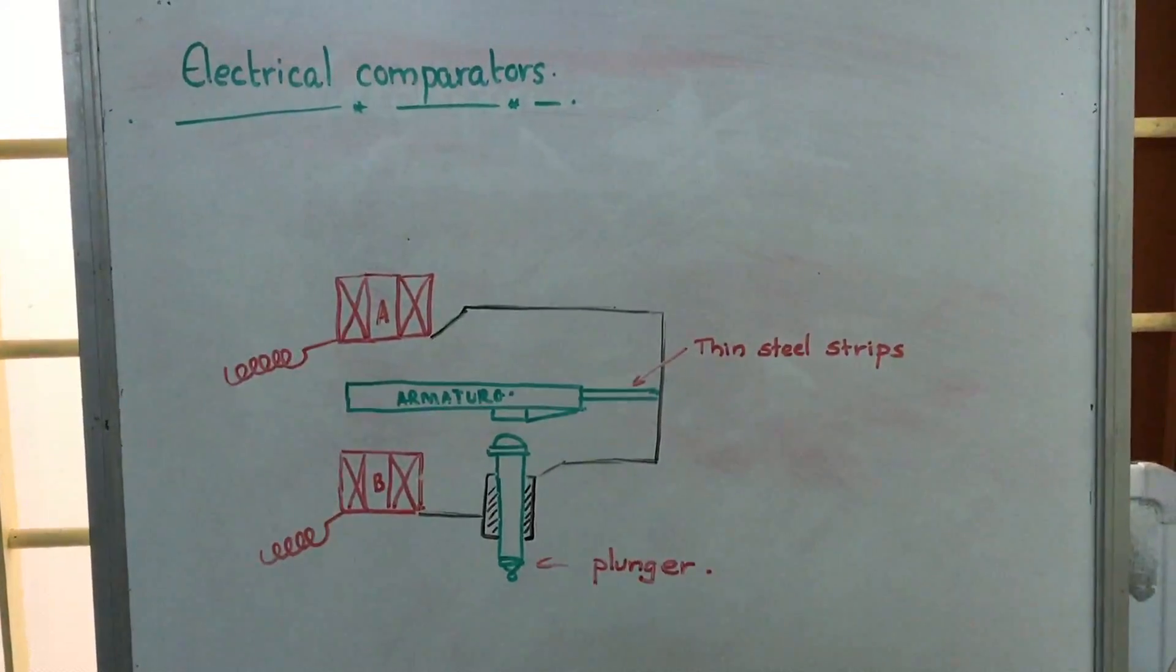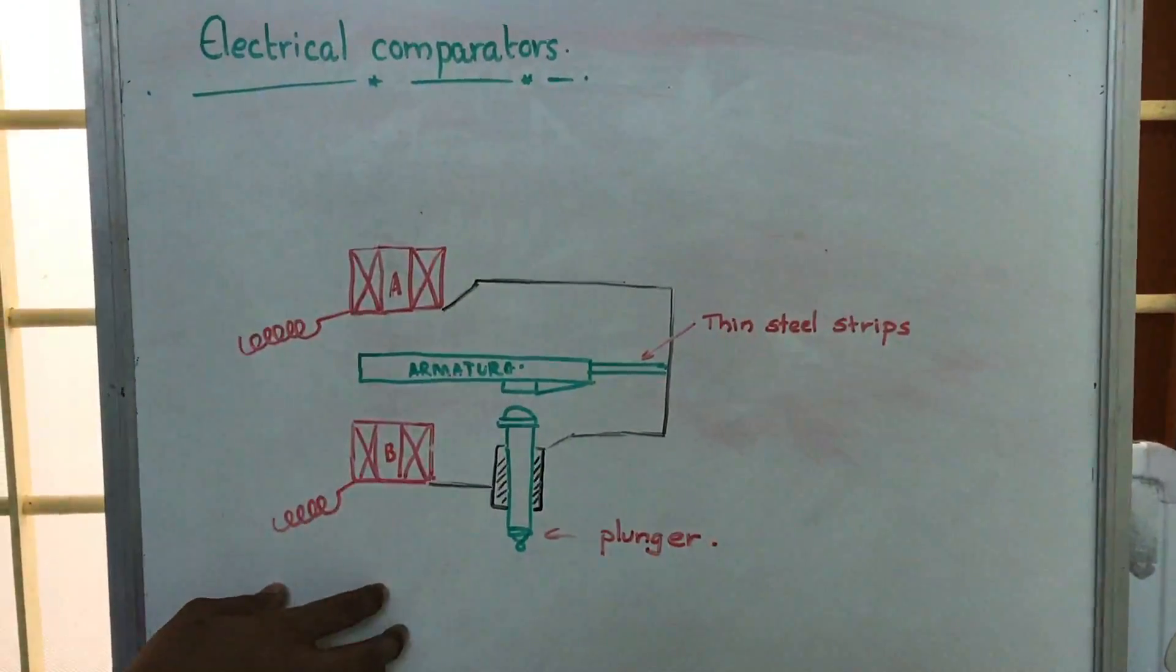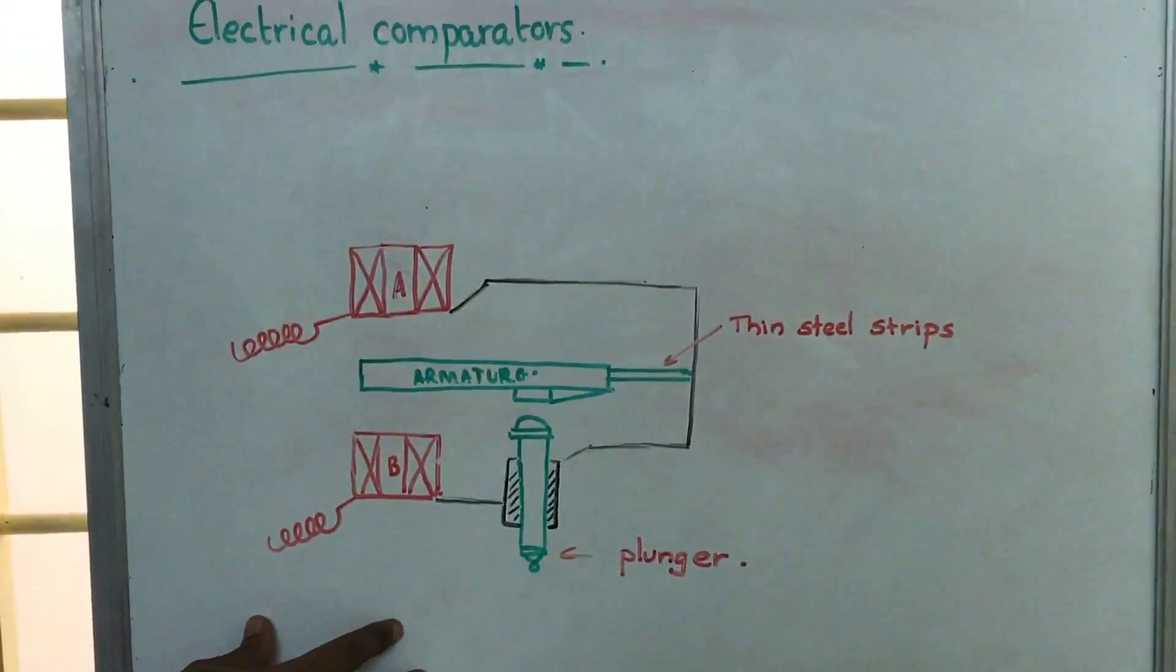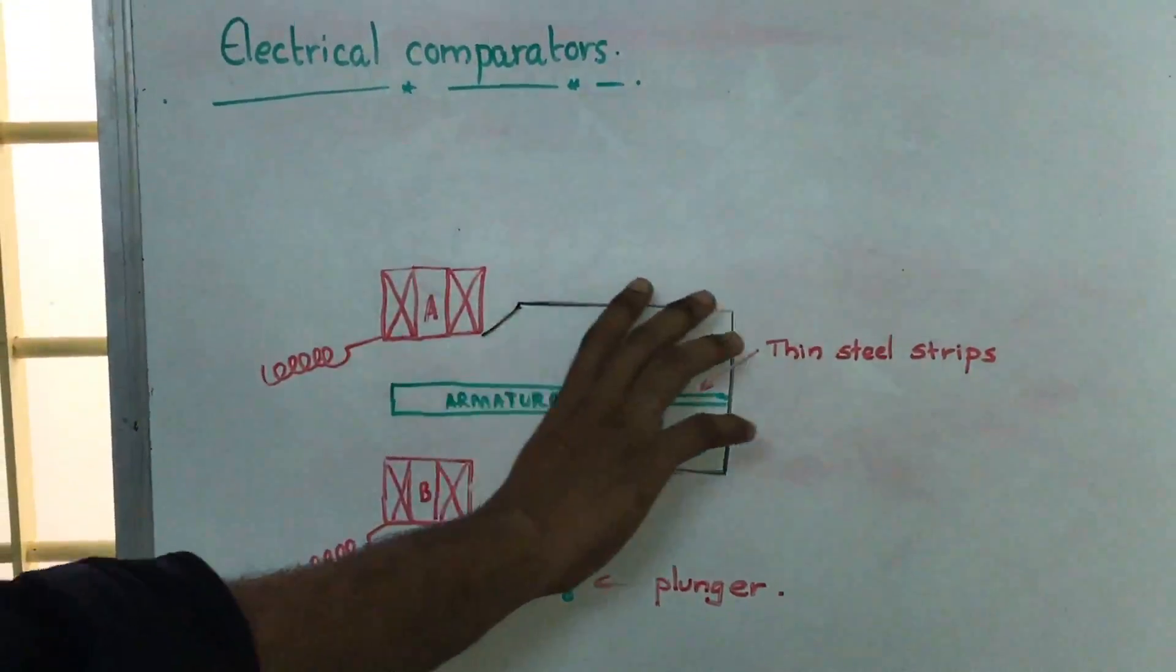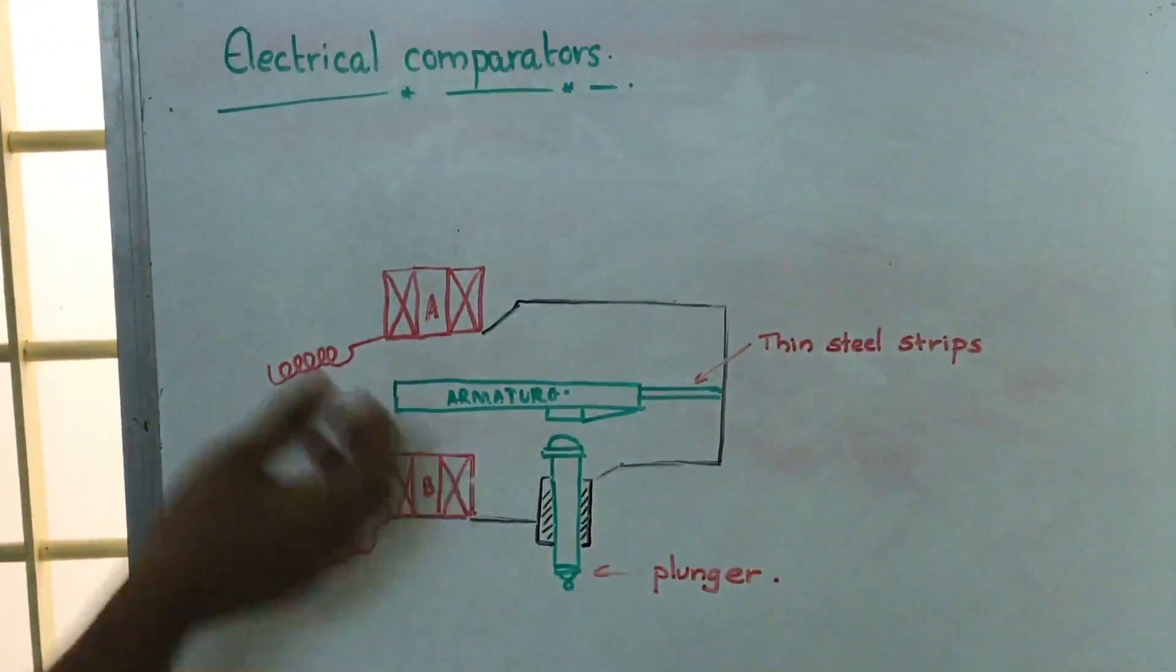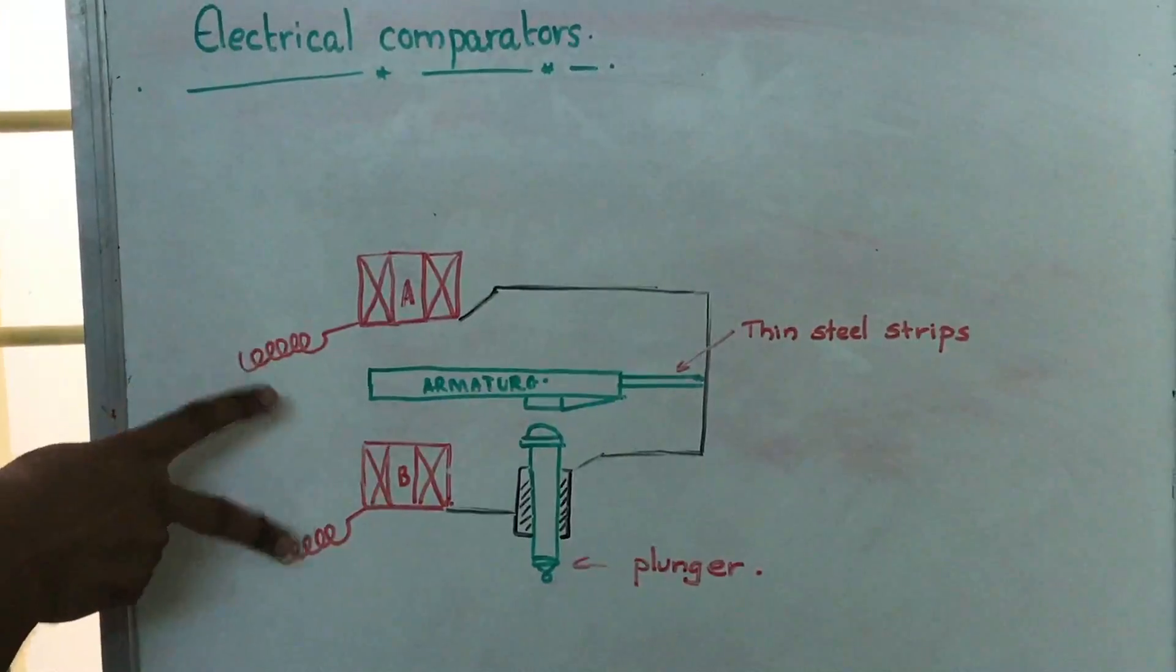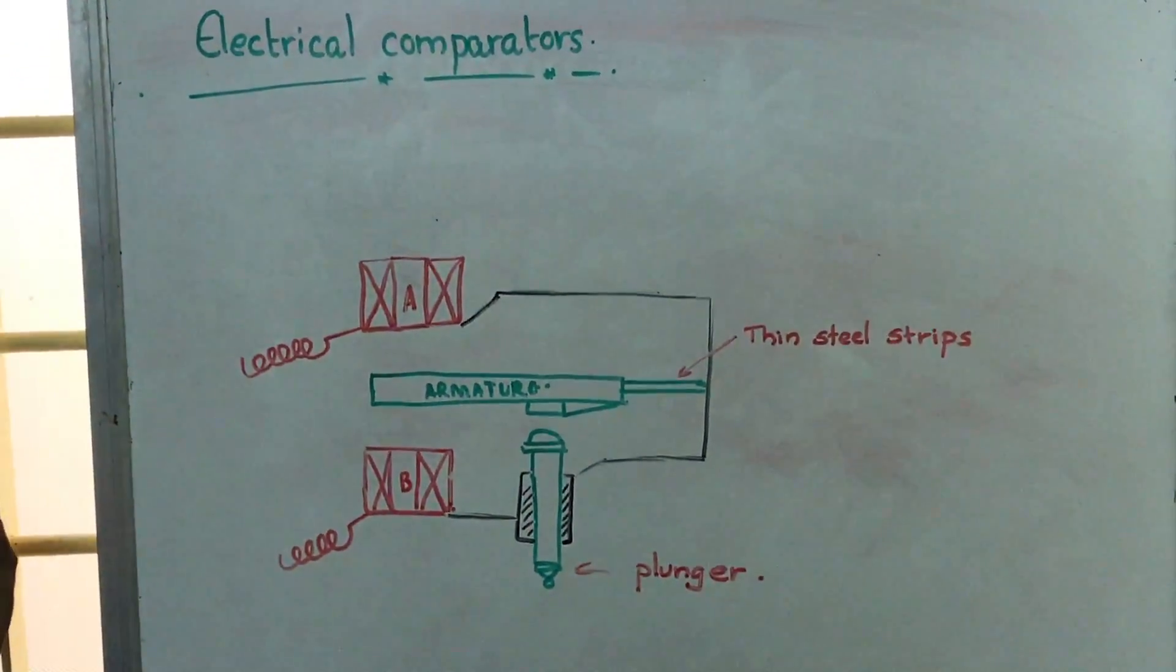In electrical comparators, the main components are two coils, A and B. These two coils are connected by wire, and we will be connecting these two coils in a Wheatstone bridge.